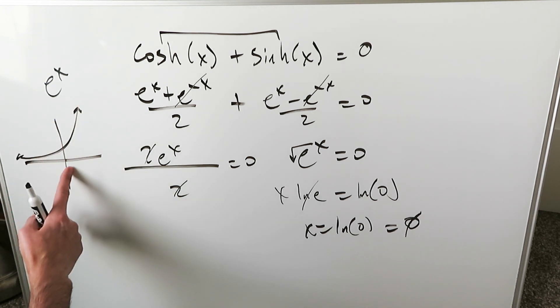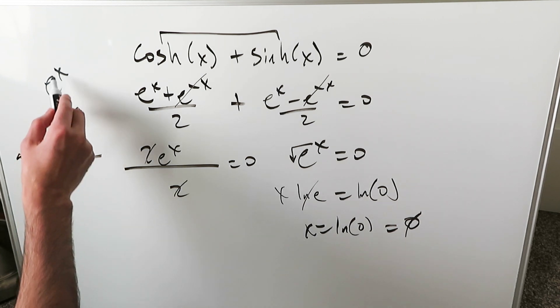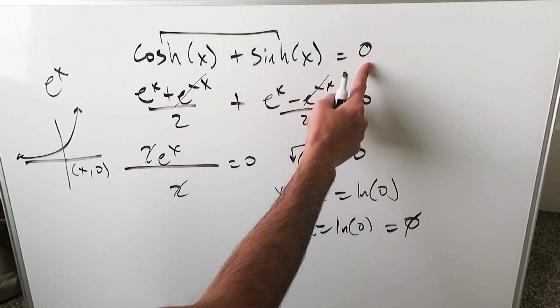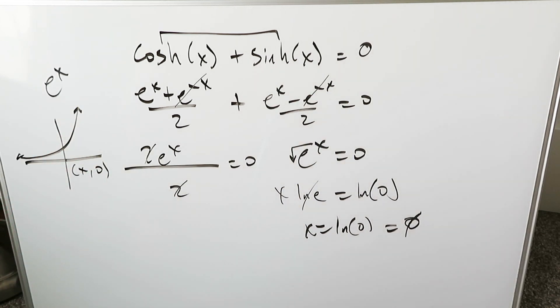This function never touches or intercepts the x-axis. There is no particular value such that you can put x in here and end up with a y output of 0. That's what we're saying. We're putting a specific x here and we're getting a y output of 0. We don't see that because this function never touches the x-axis. It is asymptotic to that axis.